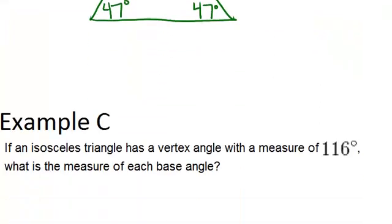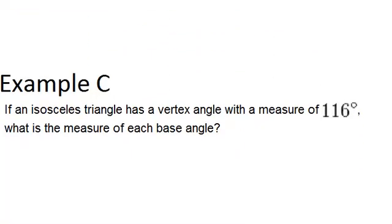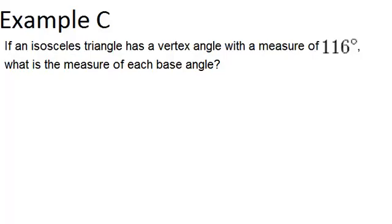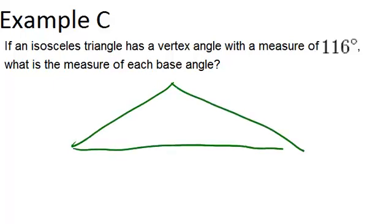Let's go on to example C. If an isosceles triangle has a vertex angle with a measure of 116 degrees, what is the measure of each base angle? Let's draw this situation. For an isosceles triangle, the vertex angle is the one that's in between the two congruent sides.